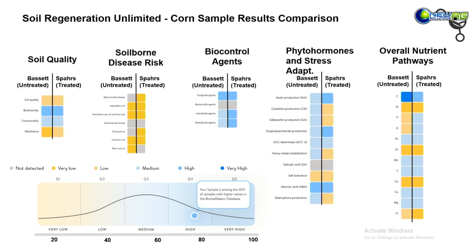On the phytohormones and stress adaptation side, this is where we probably saw the most variability overall in a category. The untreated field is in the medium range across many of these phytohormones and other metabolites, but exopolysaccharide and auxin were higher in the treated field, while gibberellin and cytokinin were lower.